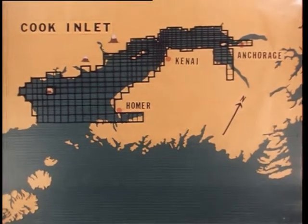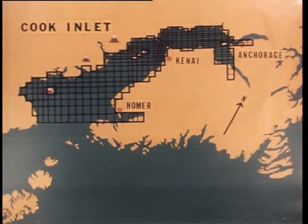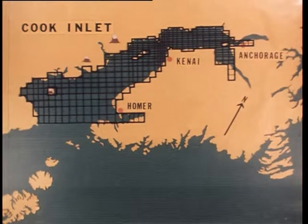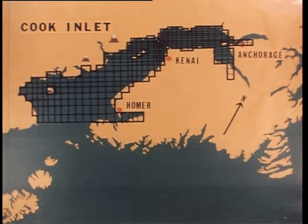Tide heights were specified along the entrance to the Gulf of Alaska, and currents normal to the solid boundaries were set equal to zero. Tide height and currents throughout the region were calculated on a high-speed computer.